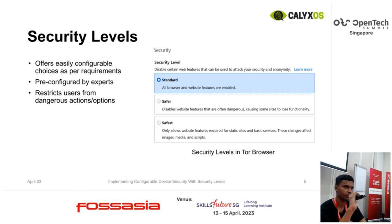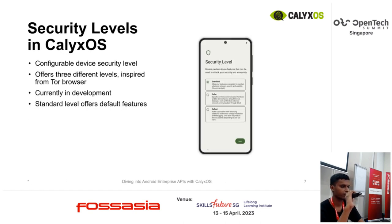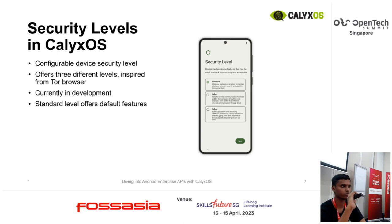That's why we actually invented it. Instead of the browser, we actually implemented security levels in CalXOS. We also implemented three security levels: Standard, Safer, and Safest. These security levels are shown to the user when they boot their device loaded with CalXOS for the very first time. It's present in the setup wizard that asks you to set up passwords, your security levels, and everything else. All these options are currently in development, which means that we are improving them as user feedback comes in.